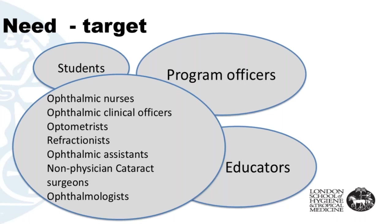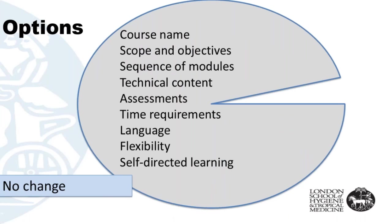Thinking about options — when adapting a course, you have options to change a lot, or just a few things, or to take it as is. For our case, we did not change a large part of the original course — only a small part. We didn't change the name, objectives, sequence of modules, content, quizzes, or time requirements. It's still four hours every week, still in English, and users can access materials using different devices at different times and learn at their own pace.